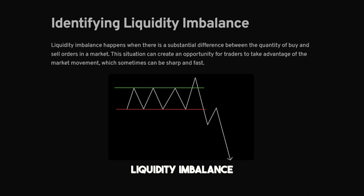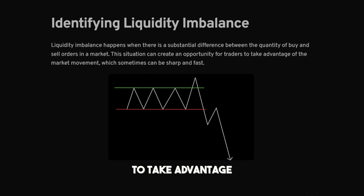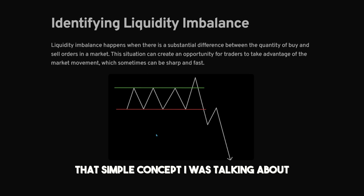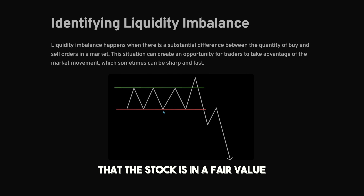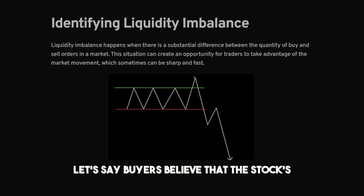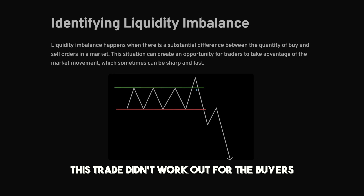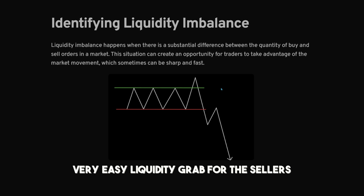Identifying liquidity imbalance: this happens when there is a substantial difference between the quantity of buy and sell orders in the market. This can create an opportunity for traders to take advantage of market movement, which can sometimes be sharp and fast. We see a range with a high and low — buyers and sellers believe the stock is at fair value. Once we break one of these levels, in this example buyers believe the stock price should be higher, so more buyers jump in. As we can see, this trade didn't work out for the buyers — and we'll talk about why this was a very easy liquidity grab for the sellers.